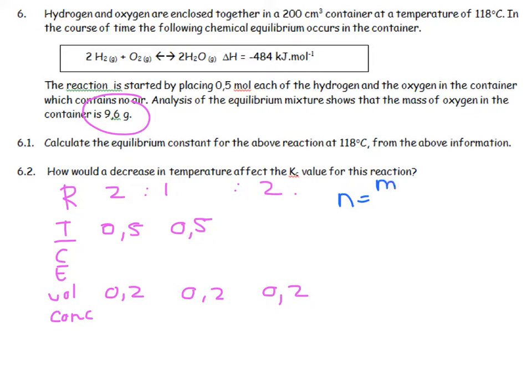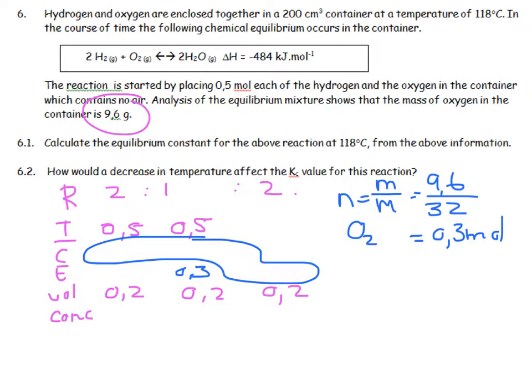Number of moles equals mass over molar mass: 9.6 divided by 32 equals 0.3 moles. At equilibrium, I'm left with 0.3 moles of O2. Using the stoichiometric link, 0.5 minus 0.2 gives 0.3. The ratio 1:2 gives 0.2:0.4:0.4. So 0.5 minus 0.4 equals 0.1, then divide through for concentrations.